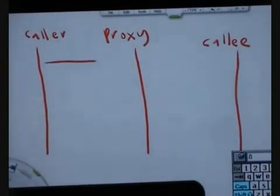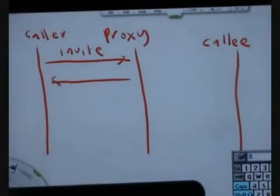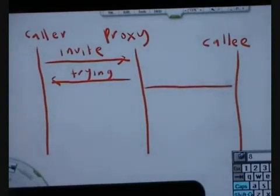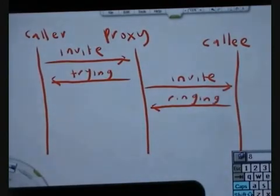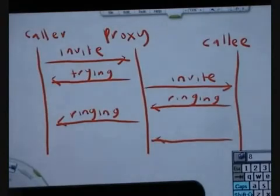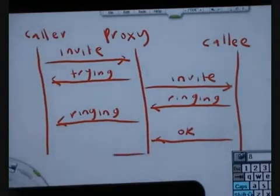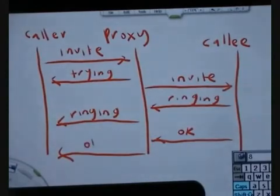First, there's an invite from the caller that goes straight to the proxy, and immediately as it accepts the invite, the proxy sends back to the caller a trying response. Almost at the same time, the proxy forwards the invite to the callee, and the callee responds with ringing, which is then forwarded back by the proxy to the caller. Finally, when the callee picks up the call, it sends an OK response that goes to the proxy, and the proxy forwards it back to the caller. At that point, the call is established.